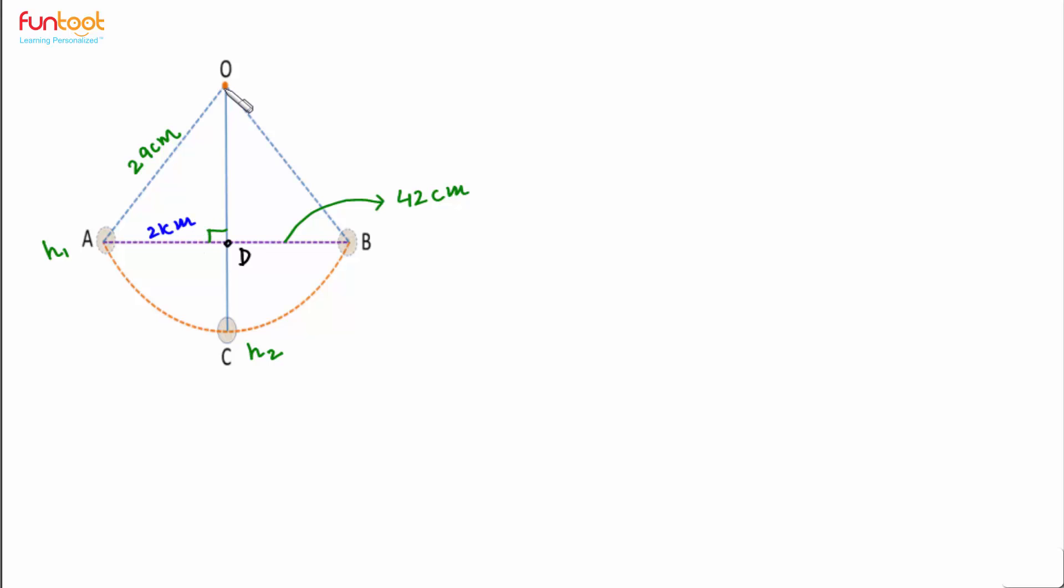Now if we apply Pythagoras theorem in right angle triangle ODA, very easily we can find the length of OD. So in right angle triangle ODA, we have OA squared is equal to OD squared plus DA squared.